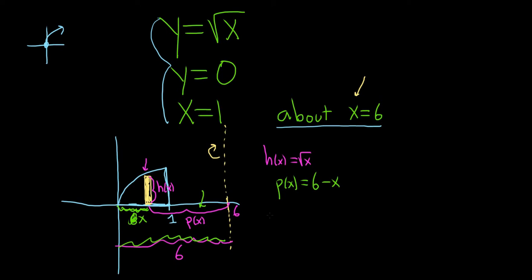All right, so the volume, it's shell, so we have the 2 pi, so it's 2 pi. We're integrating with respect to x, so we'll go left to right, so 0 to 1. And it's p times h, so 6 minus x, times the square root of x, dx, so p h.